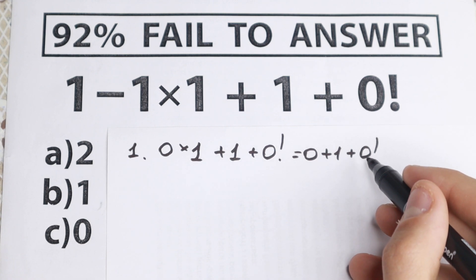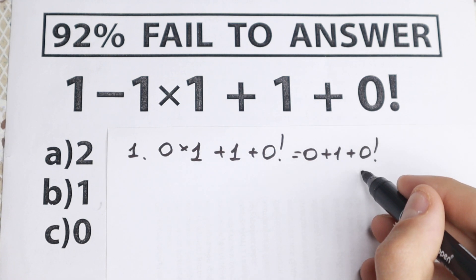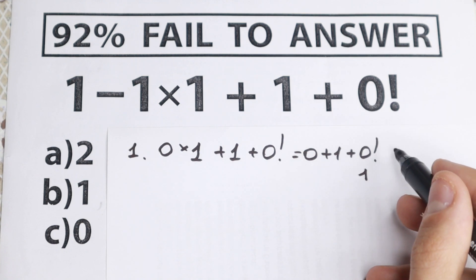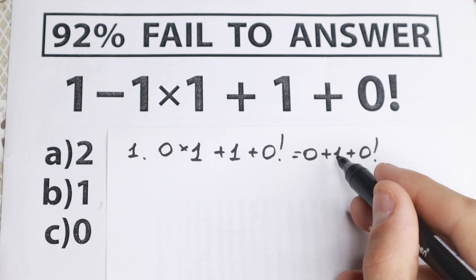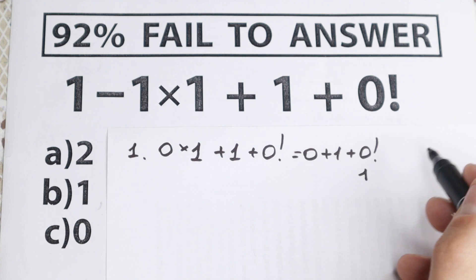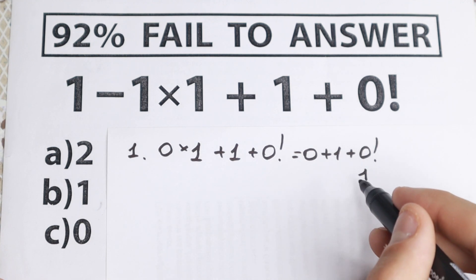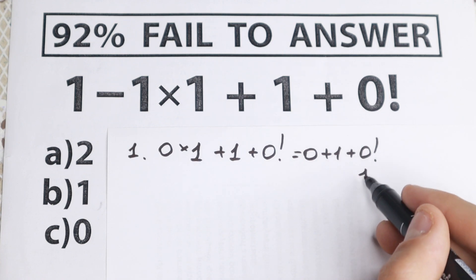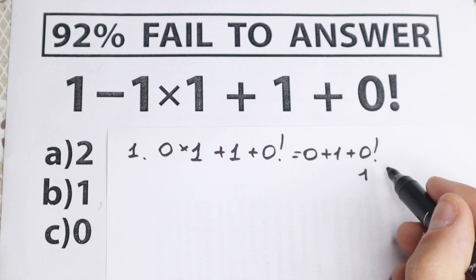The second mistake: a lot of students don't know that 0 factorial is equal to 1, not 0. A lot of students say 0 factorial equals 0, so they get 1 plus 0 plus 0 equal to 1 and choose option B. But 0 factorial equals 1 — this is the second really important step.